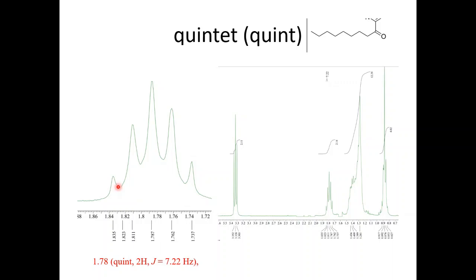The intensity follows the Pascal triangle. For J value calculation, just click on any two adjacent peaks in the software and you will get the J value displayed at the top of the spectrum. When reporting the J value, you must match it: this triplet and this triplet — if this gives 7.22, this one will also give 7.22, meaning they are coupled to each other. So this quintet signal is nicely coupled with this triplet.